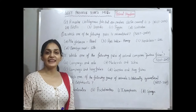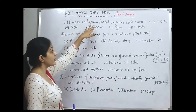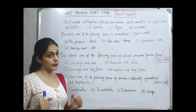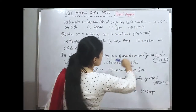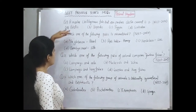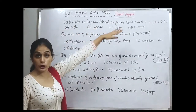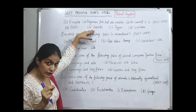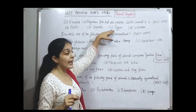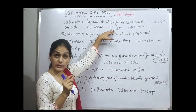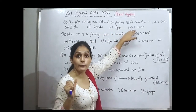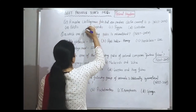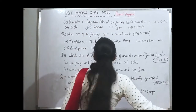Question number nine from 2014: a marine cartilaginous fish that can produce electric current — what is it? The options are Torpedo, Trigon, Scoliodon, and others. Torpedo is the electric ray, which produces electric current. Trigon is the sting ray, which has a poison sting. Scoliodon is the dog fish. The correct option is Torpedo, the electric ray.